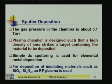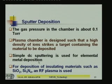The gas pressure in the chamber is about 0.1 torr. The plasma chamber is designed so that a high density of ions strikes the target containing the material to be deposited. Simple DC sputtering is used for elemental metal deposition. For deposition of insulating materials such as silicon dioxide or silicon nitride, RF plasma is used, because for DC sputtering you cannot get the negative field at the insulator. Therefore, for insulator material deposition, RF sputtering technique is required.